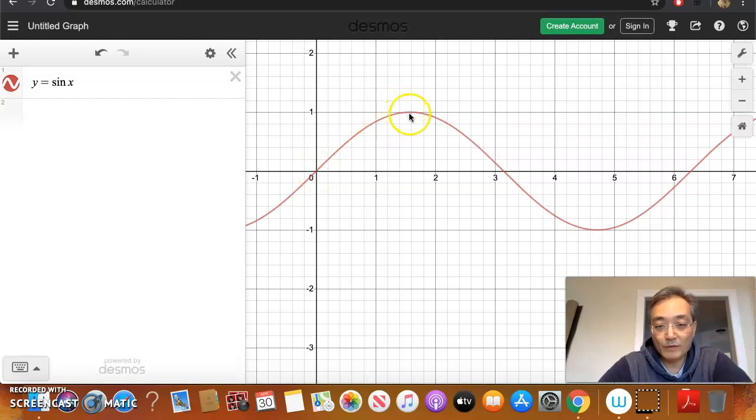Just the parent sine function. Goes up to 1 for the max, comes back down to negative 1 for the min, and then finishes at 0 again. And this here is 2π. Right? π is about 3, so 2 times 3 is 6, a little more than 6. So we can see that that is one full period for sine.